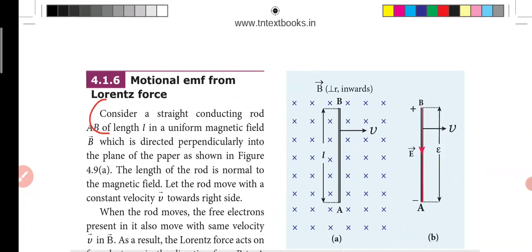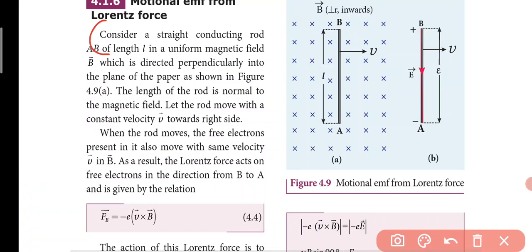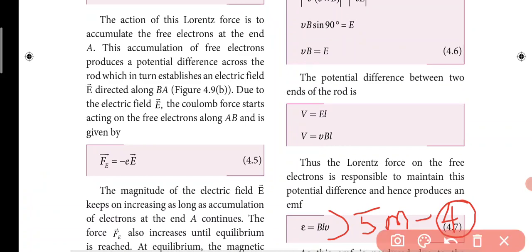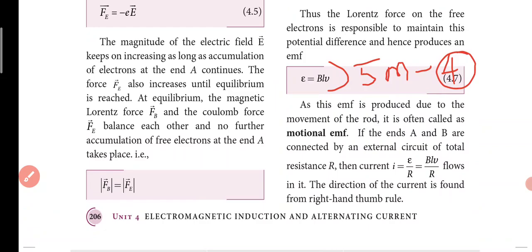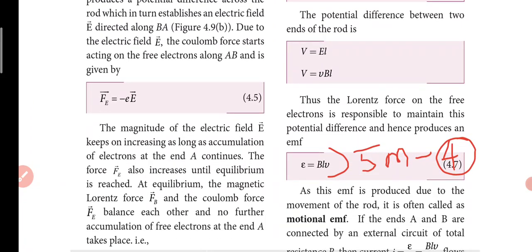Motional EMF from Lorentz force is 3 mark question. First take the theory and diagram. Consider a straight conductor moving with uniform velocity towards the right side. Then use the Lorentz force equation directly. Then the Coulomb force and equation. Then equate the two equations to get epsilon equals BLV.